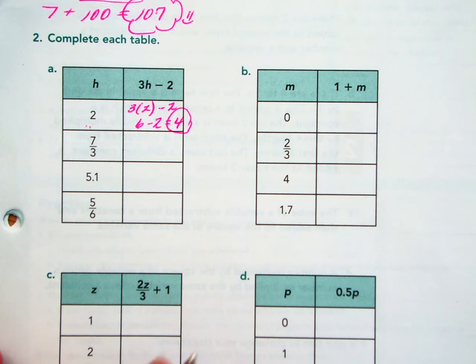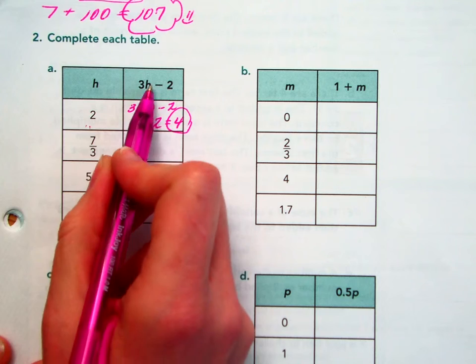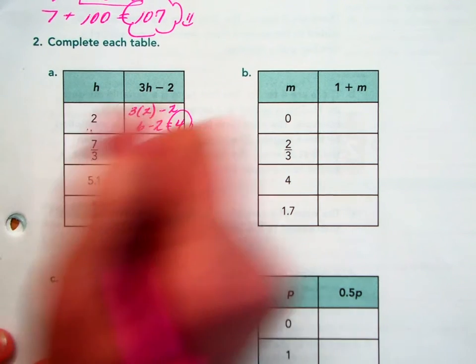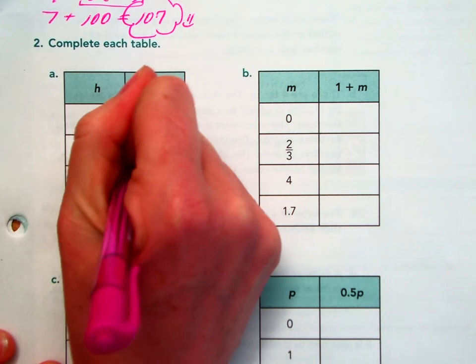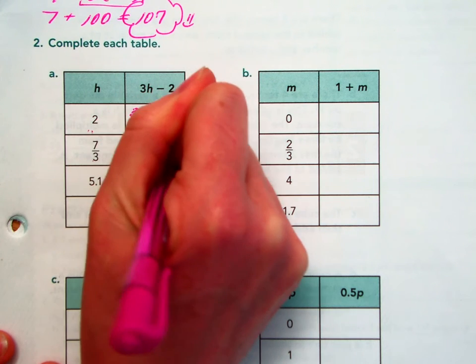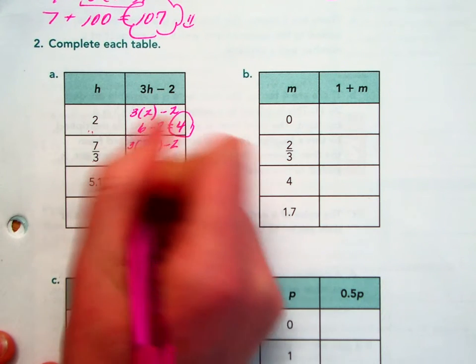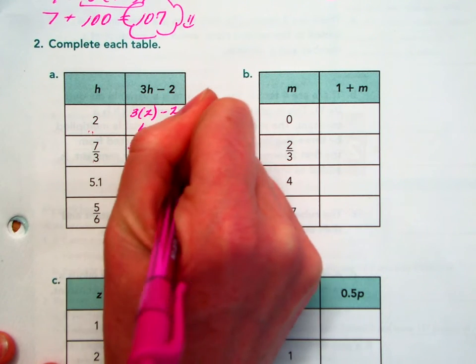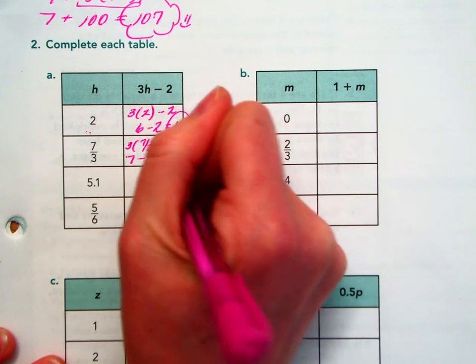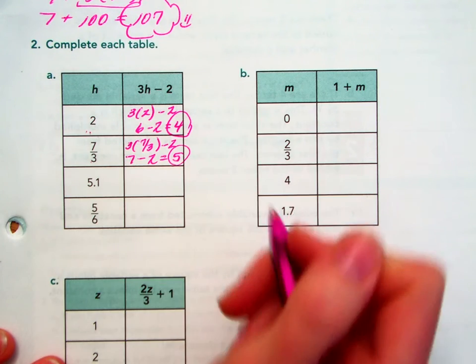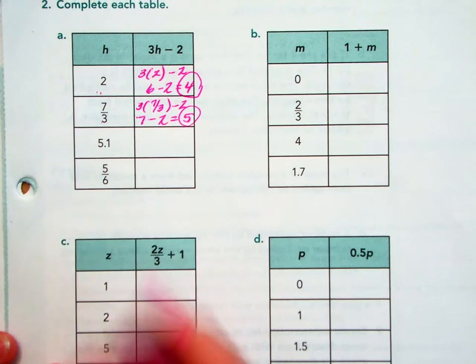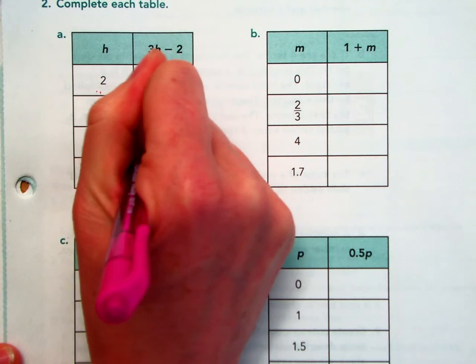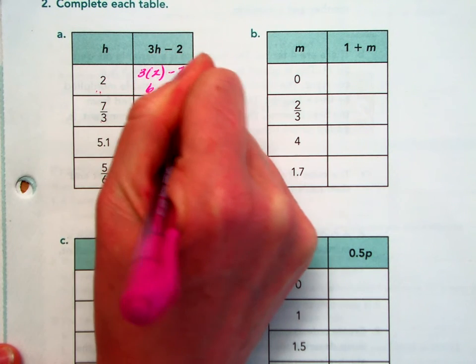But if I continue and say this time that H is worth 7 thirds, which is an unusual number, we would evaluate 3 times 7 thirds minus 2. If some of you are thinking about cross-canceling, you're thinking, good, it's 7 minus 2 equals 5. That cross-canceling that just happened there, I'll show you that in person.